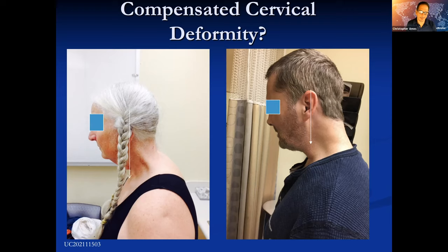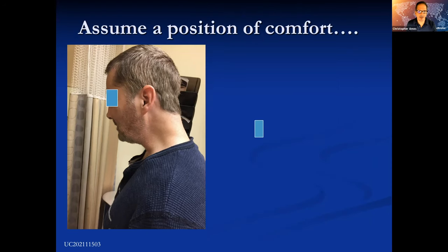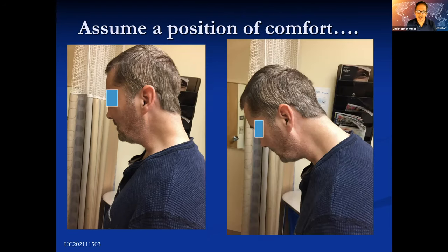These patients are much like the flatback patients who compensate with their pelvis. They can hide their deformity through hyperlordosis — this is often at the occipital cervical junction — but also they can hide it a bit with pelvic tilt and even lumbar hyperlordosis. When we ask them to assume a position of comfort, that's when they uncover the deformity. They relax their compensation and fall forward into a more relaxed, comfortable position because they don't have that increased energy expenditure.